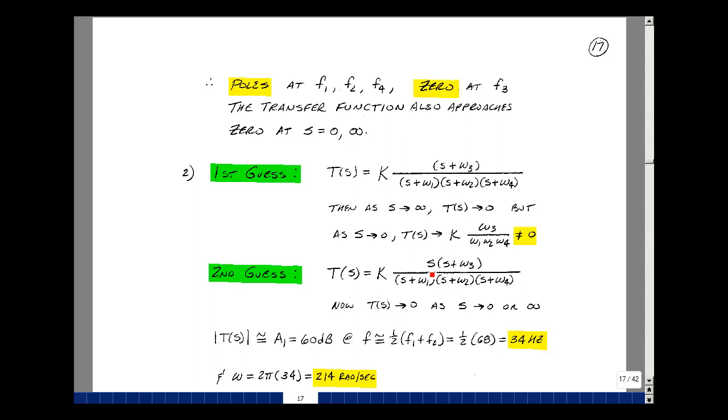As S approaches infinity, we're going to get S squared divided by S cubed, and that's going to be decreasing and consistent with the Bode plot. And then as S approaches 0, we have S times ω3 divided by ω1 times ω2 times ω4, and all that times K. And so that's approaching 0 as S is approaching 0. This is definitely consistent with our Bode plot.